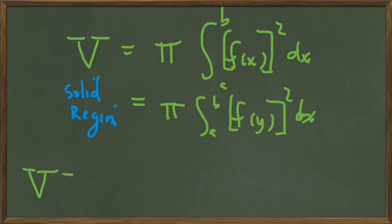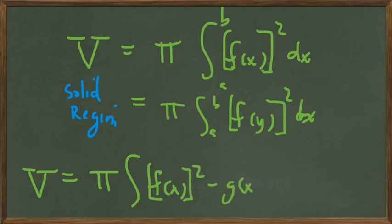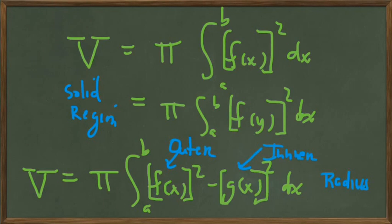When we have a region, like an outer region, as in Example 2 that we just completed, it would be f of x squared minus g of x squared dx, or f of y, g of y, if we're revolving about the other axis. And these f of x and g of x represent, respectively, the outer radius squared minus the inner radius squared. Let's box those two formulas, and that will complete this video on the disk method for finding volumes of rotation.